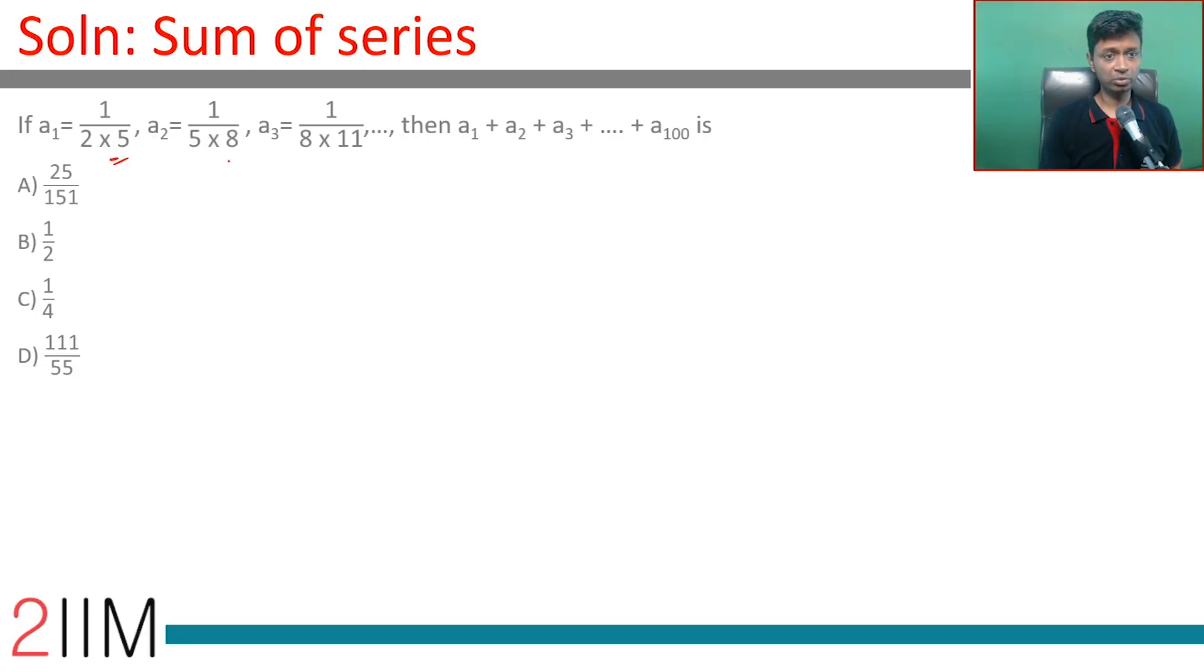A1 is 1 by 2 into 5, A2 is 1 by 5 into 8, A3 is 1 by 8 into 11, all the way till A100. How do we do this?